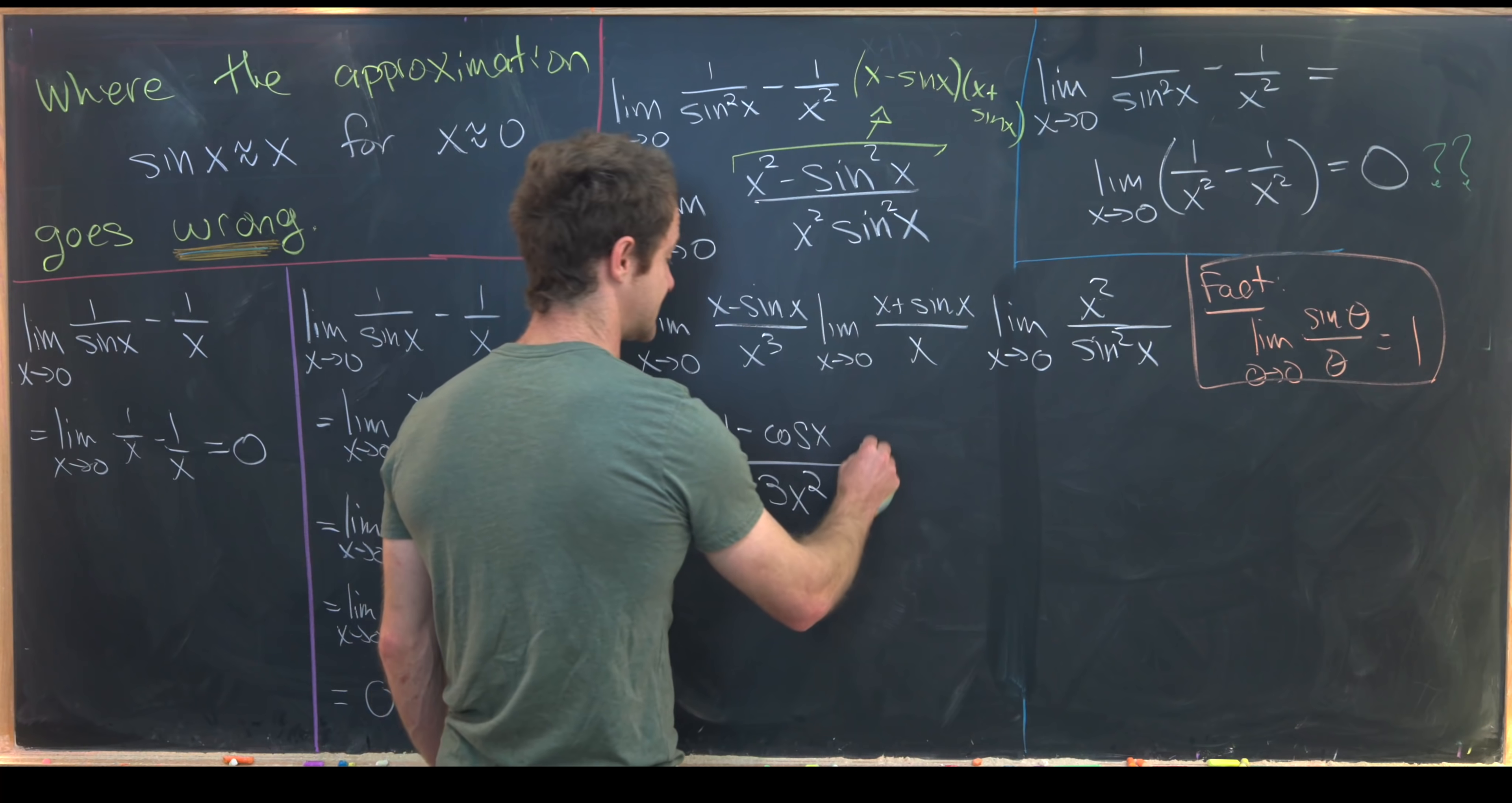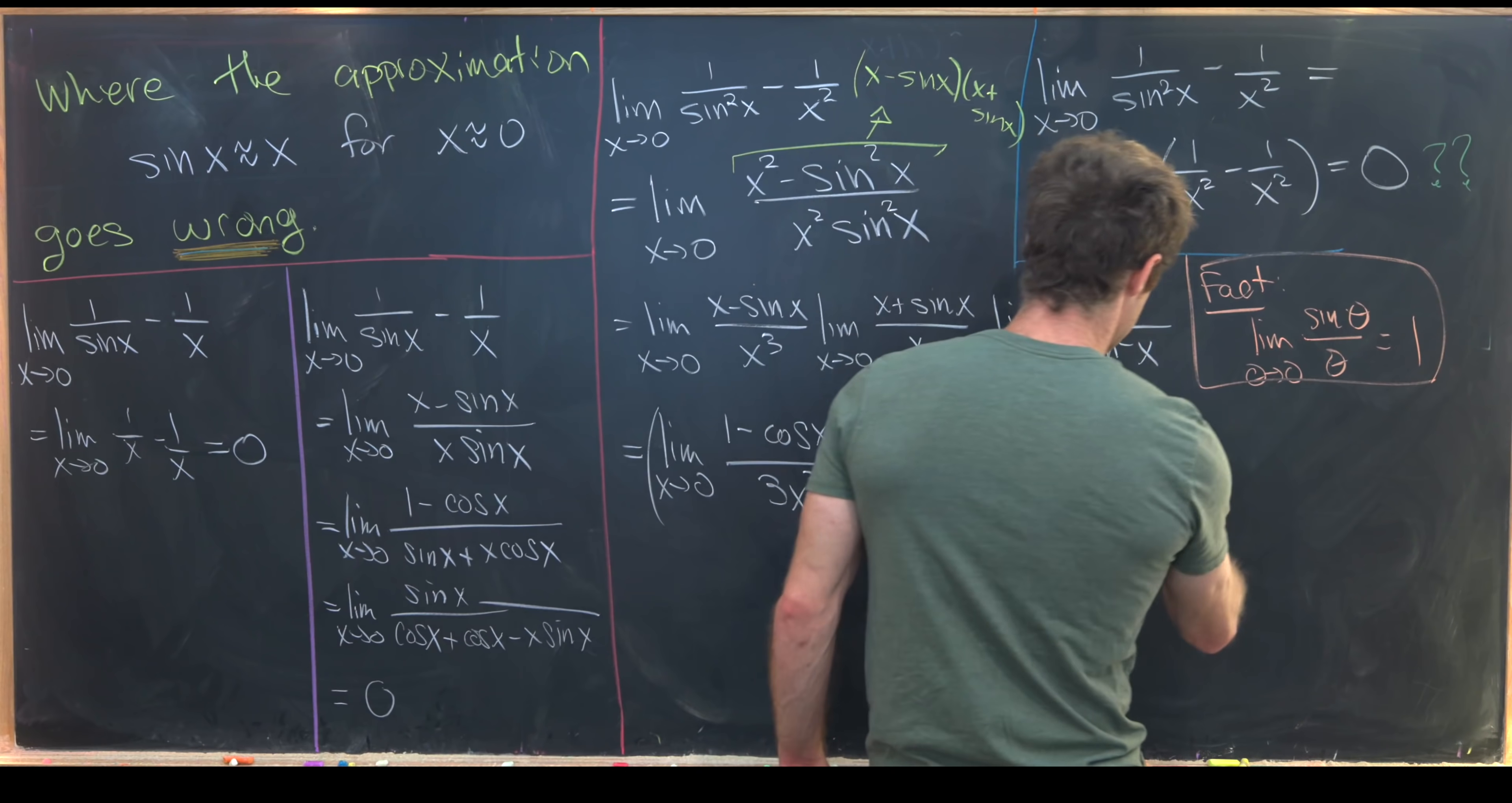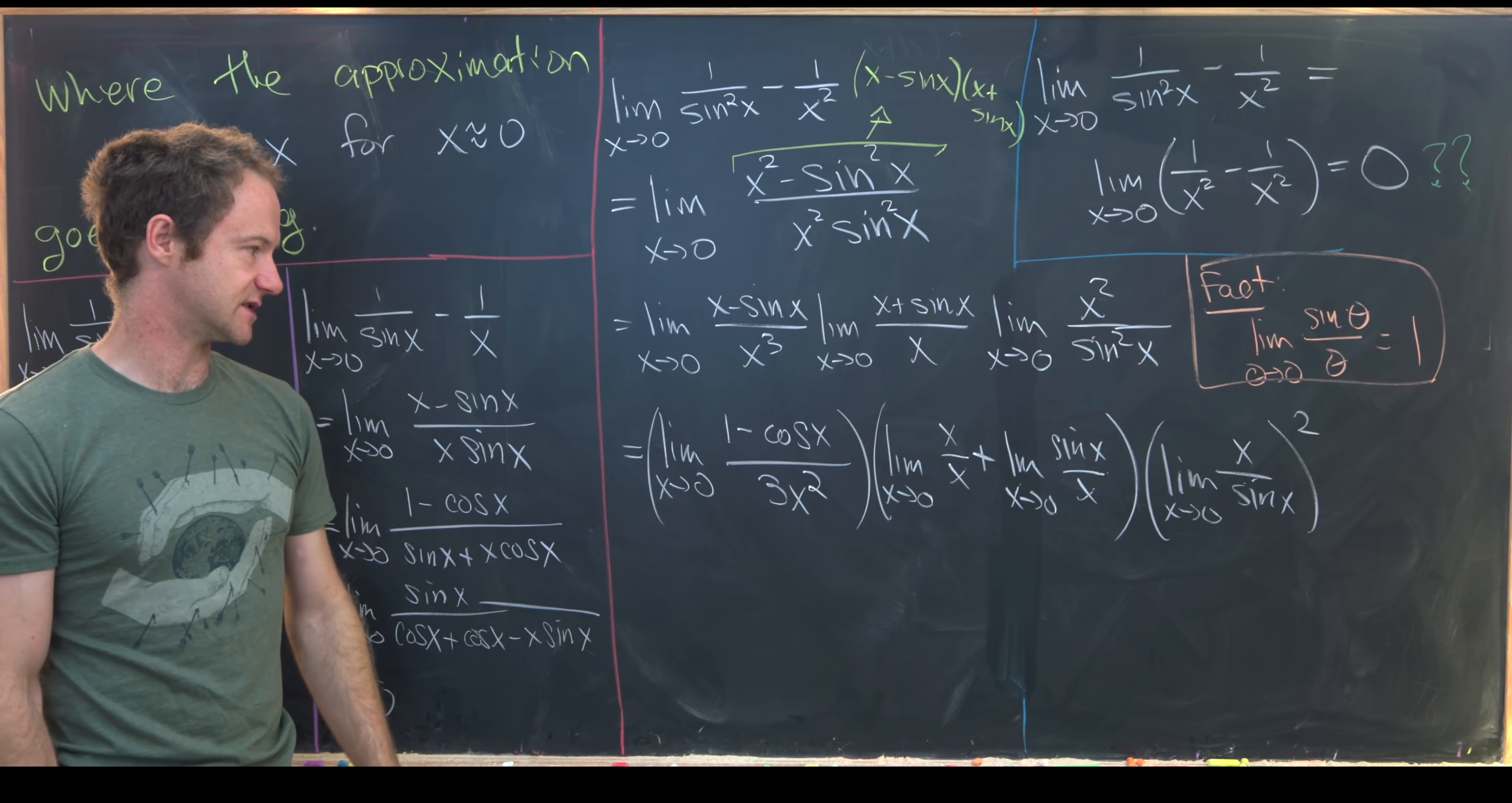This limit is the sum of two limits which are nice. Notice that this is the limit as x goes to zero of x over x plus the limit as x goes to zero of sine of x over x. And then the last one is the square of a limit which is nice. This is the limit as x goes to zero of x over sine of x squared. Where here we're using obviously the fact that all of these component limits exist. So when we combine them together into our goal object that limit also exists.